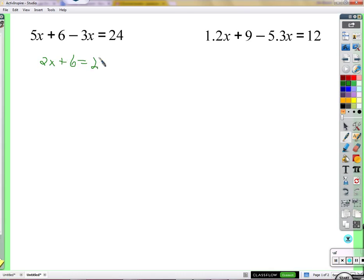If we do that, then what we have here is now just what we call a two-step equation. And next I would subtract 6 on both sides, get 2x equals 18, divide by 2 on both sides, and x is 9.